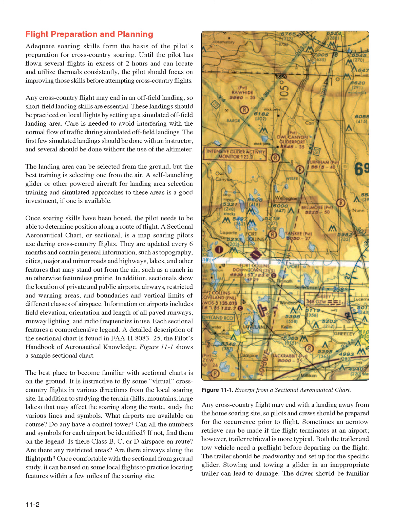Once soaring skills have been honed, the pilot needs to determine position along a route of flight. A sectional aeronautical chart, or sectional, is a map soaring pilots use during cross-country flights. Updated every six months, they contain general information such as topography, cities, major and minor roads and highways, lakes, and other features that may stand out from the air, such as a ranch on an otherwise featureless prairie.